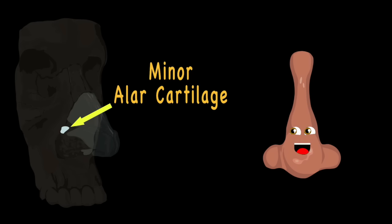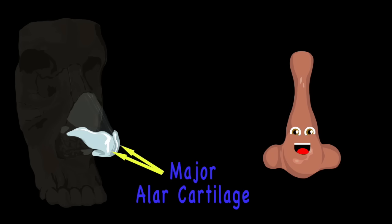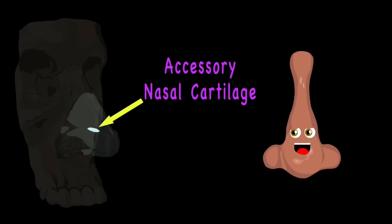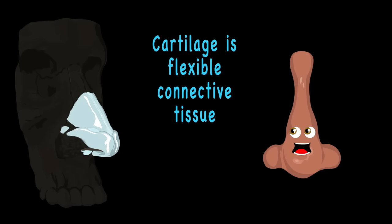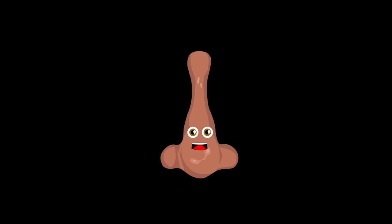The minor alar cartilage is not very big. The major alar cartilage has two parts, seen in this here fig. The accessory nasal cartilage sits on the side. Nose cartilage is flexible connective tissue, as I've exposed.